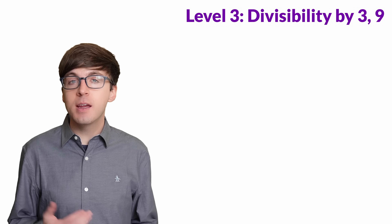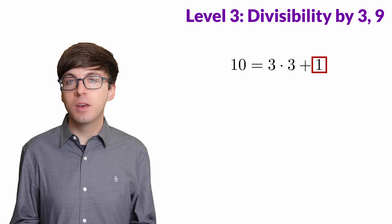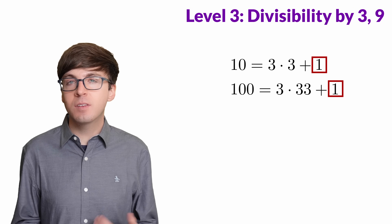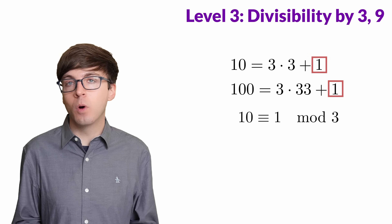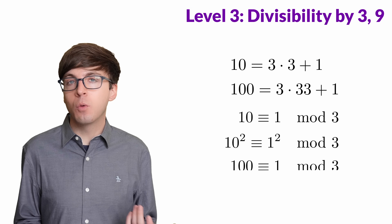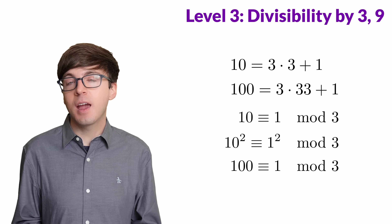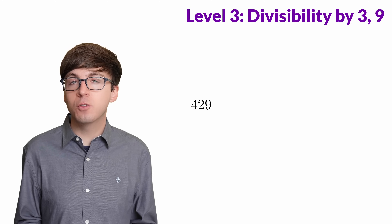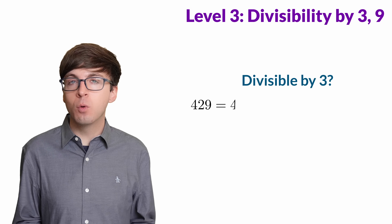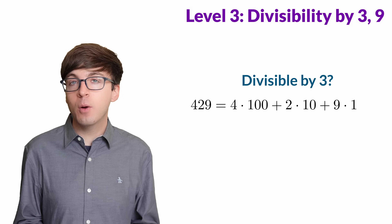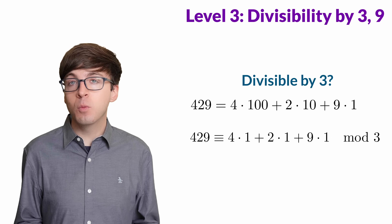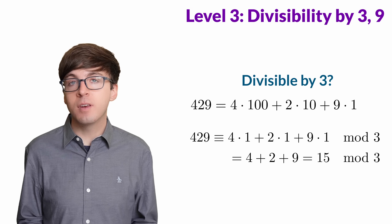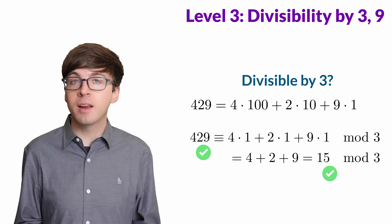For level 3, let's talk about dividing by 3 and 9. 10 divided by 3 has a remainder of 1. 100 divided by 3 also has a remainder of 1, and so on. Since 10 has a remainder of 1 when we divide by 3, we say that 10 is congruent to 1 modulo 3. So if we're only looking at remainders when we divide by 3, 10 is essentially the same as 1. So 10 squared is essentially the same as 1 squared, meaning 100 is congruent to 1 modulo 3, and so on for all higher powers of 10. Say we want to check if 429 is divisible by 3. We write it as 4 times 100 plus 2 times 10 plus 9 times 1. All the powers of 10 are congruent to 1 mod 3, so the remainder is congruent to 4 plus 2 plus 9, which equals 15 — divisible by 3. So 429 is also divisible by 3.